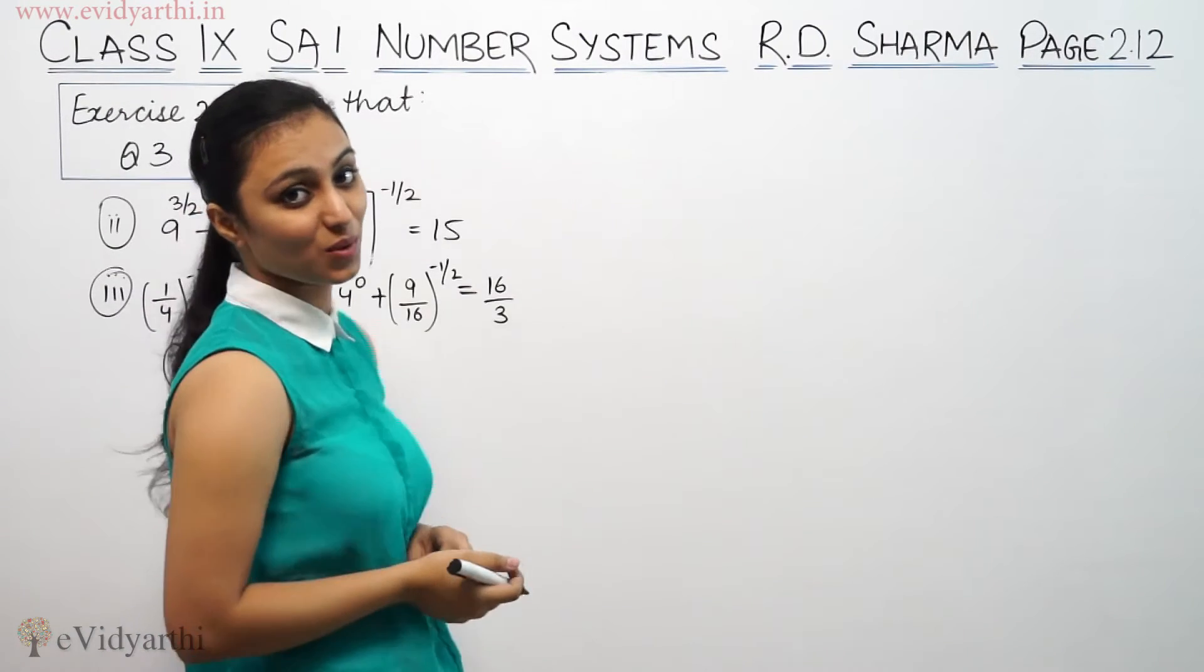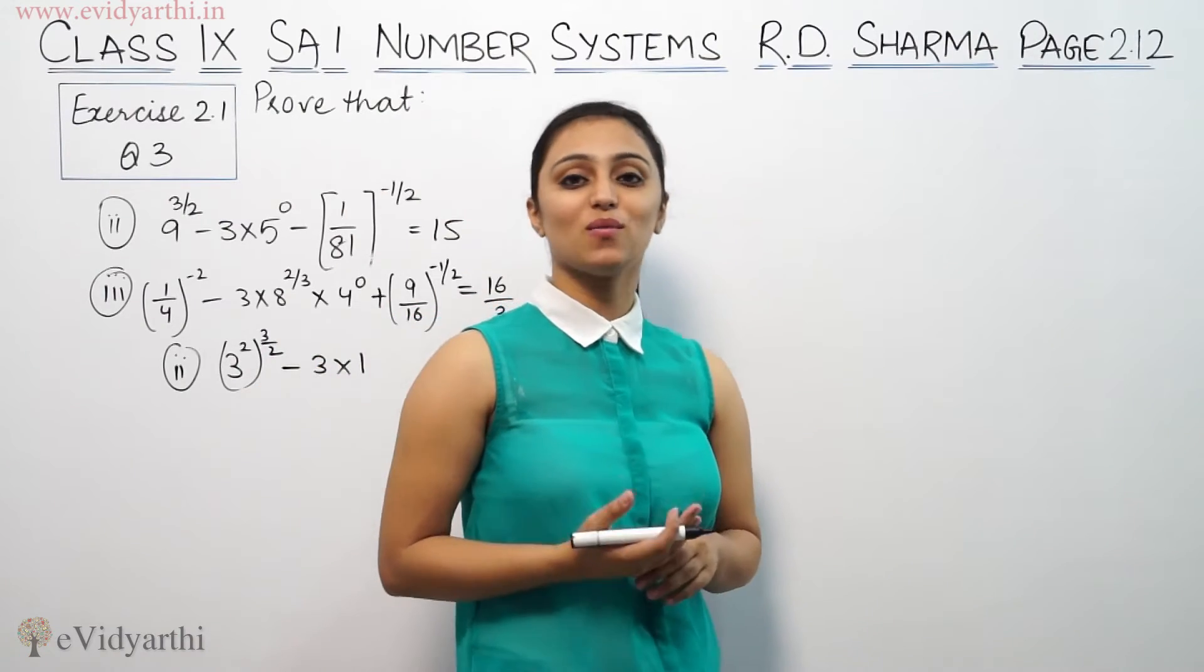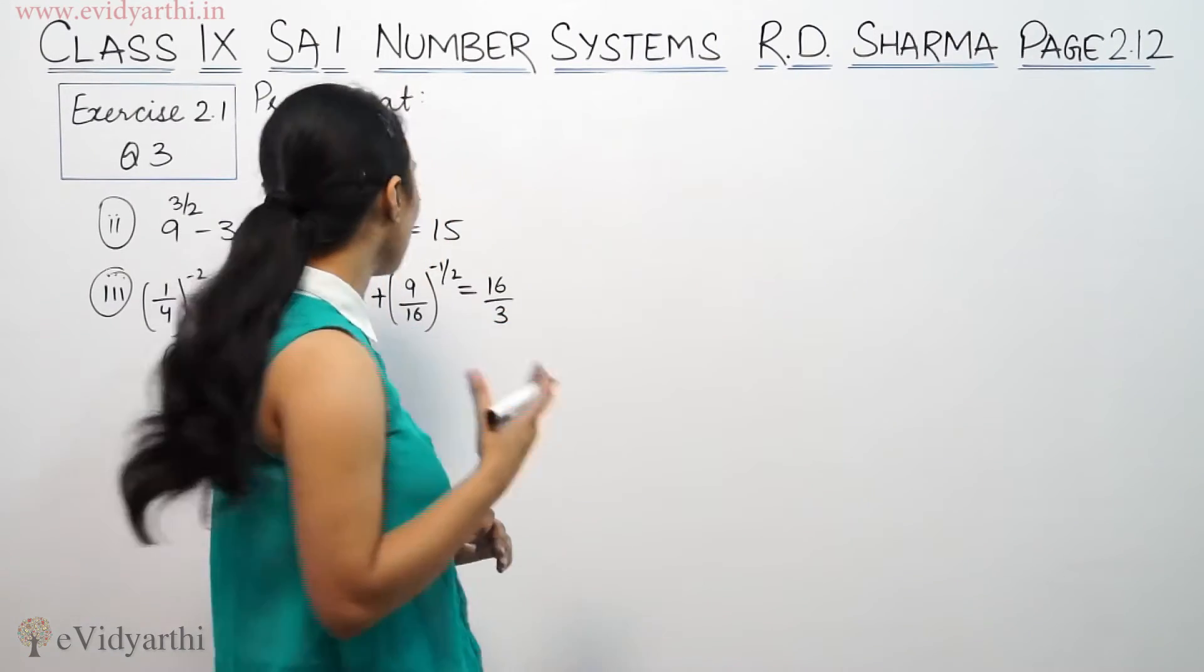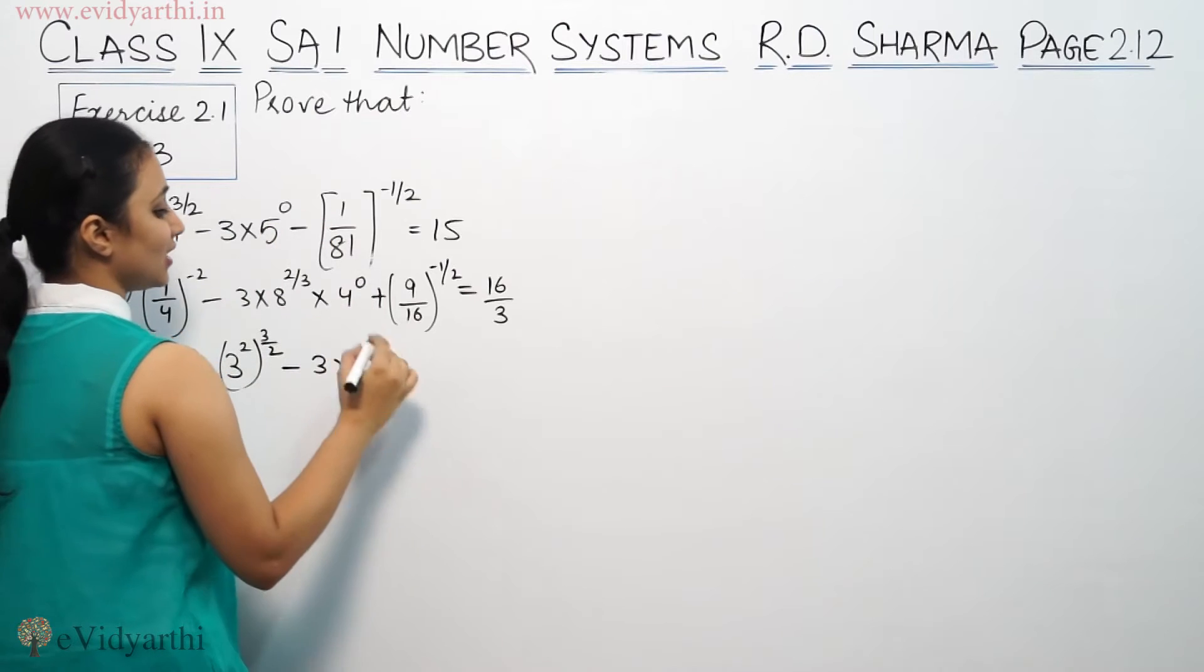So, we have minus 1 to the power 0, a power 0, x power 0, p power 0, any number, any digit, any variable, something's power 0, it means 1.